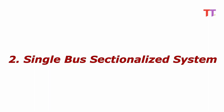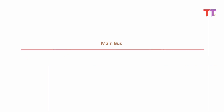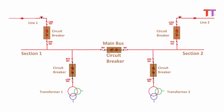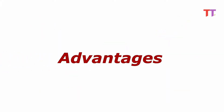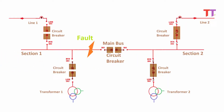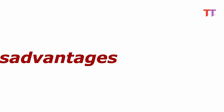2. Single bus sectionalized system. This is a single bus system with an additional circuit breaker and isolators, making two different sections of the bus, hence called the single bus sectionalized system. Advantages: since there are two sections separated by a circuit breaker, a fault on one section does not interrupt the other section — the circuit breaker isolates the faulty section from the healthy one. Also, maintenance of a bus section can be done individually without affecting the other section, hence power supply continuity is maintained.